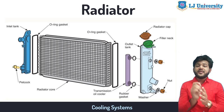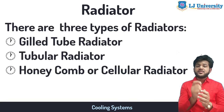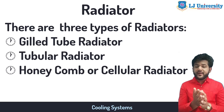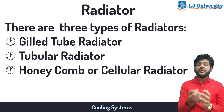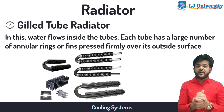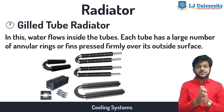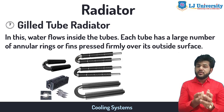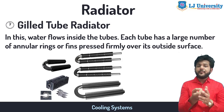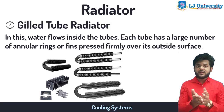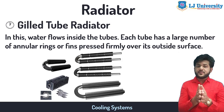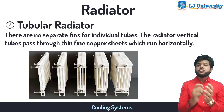There are normally three types of radiators: gilled tube radiator, tubular radiator, and honeycomb or cellular radiator. The gilled tube radiator is perhaps the oldest type, although it is still in use. In this radiator, water flows inside the tubes, and each tube has a large number of annular rings — fins — pressed firmly over the outside surface.